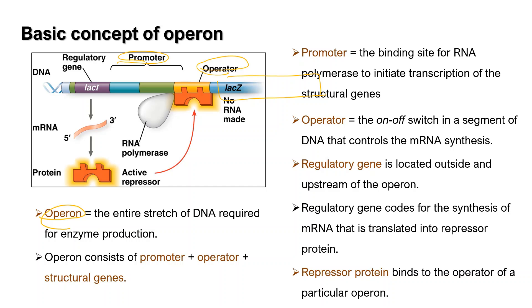There is also the regulatory gene, which is located outside and upstream of the operon. The regulatory gene codes for the synthesis of mRNA that is translated into a repressor protein. The repressor protein binds to the operator of a particular operon.